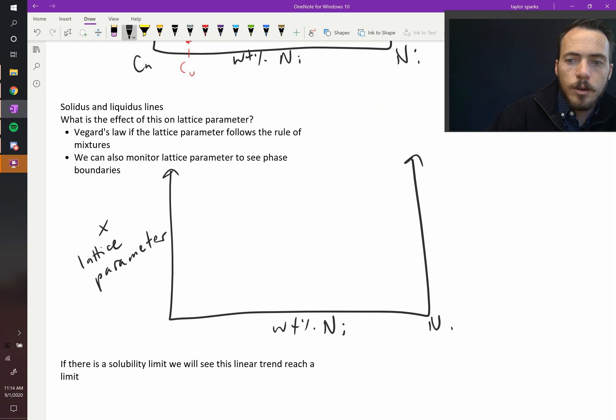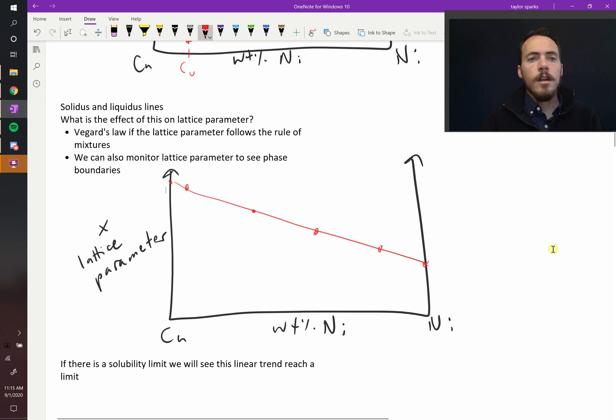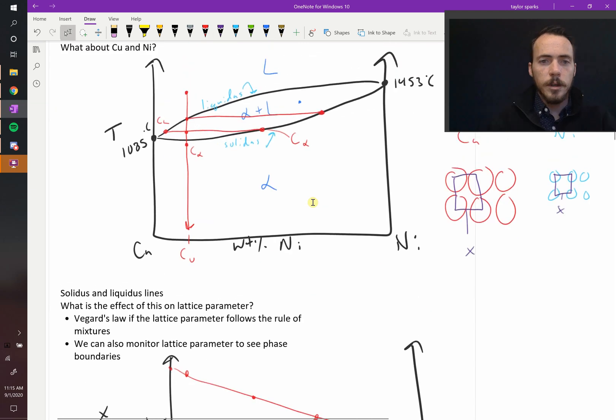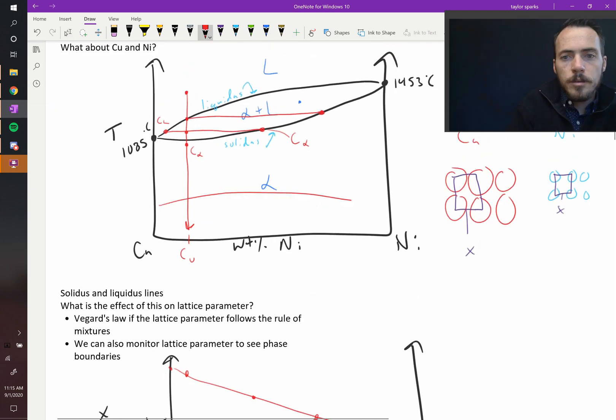So again, pure nickel over here, pure copper over here. We just showed you that because it's a complete solid solubility, you'd expect to see a nice straight line all the way across. So you've got data points straight across. If you experimentally made this, this is what you'd expect to see. That's because there's no solubility limit. You can dissolve copper completely into nickel and vice versa. These things are completely soluble one in another.